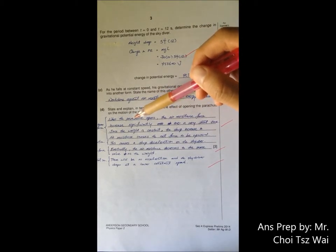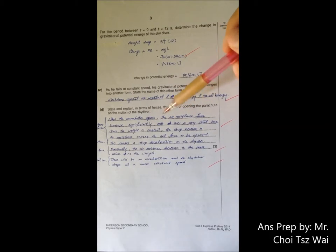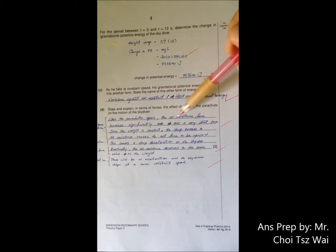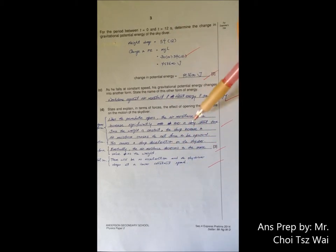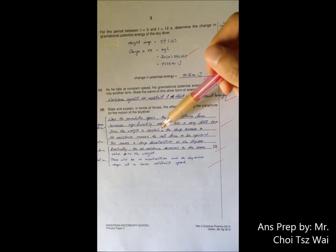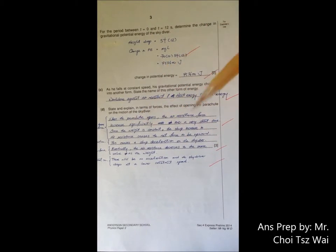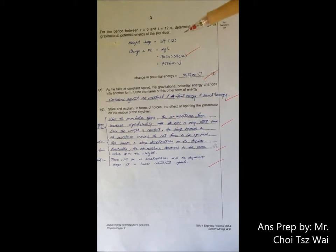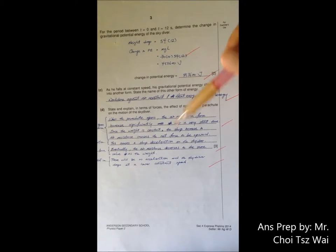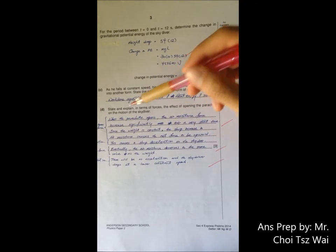Start off with when the parachute opens, because that is the context of the question. Explain it in terms of the forces first. When the parachute opens, you can add that the surface area increased significantly, and so the air resistance force increased significantly over a very short period of time. So it's a sharp increase in the air resistance. And because the weight is always constant, the opening of the parachute will not change the mass. It only changed the shape.